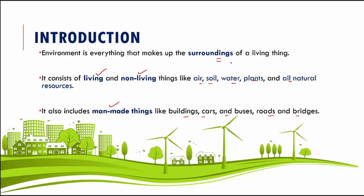We get all the things that we need from our environment. If you take humans, for example, we have found many different ways of making our lives comfortable. We have created good houses and gadgets like grinders and washing machines, and even sources of entertainment like television. But by doing so, we have also damaged the environment, and that is what we will be seeing in this chapter.